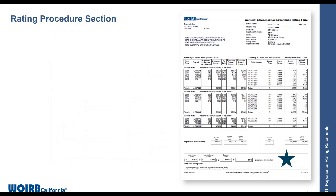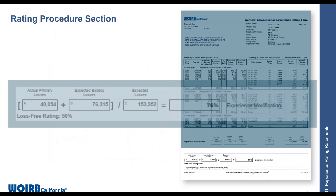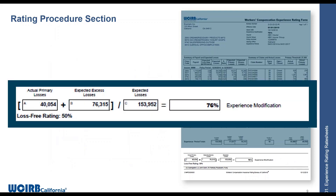At the bottom is the rating procedure section, which shows the actual calculation for the experience modification. We include the actual primary losses, the expected excess losses, and the expected losses in the calculation. In this example, the XMOD is 76%. Below that, you'll see the loss-free rating, which is the experience modification that would have applied if the risk had no claims in the experience period.